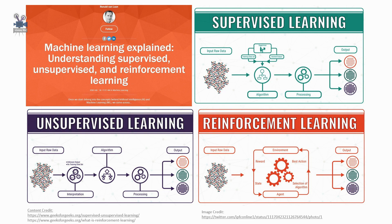Now suppose after training the data you are given a new separate fruit — say a banana from the basket — and asked to identify it. Since the machine has already learned from the previous data, it will first classify the fruit by its shape and color and confirm the fruit name as banana, putting it in the banana category. This machine learns from training data and then applies that knowledge to new test data.